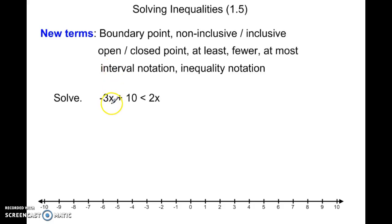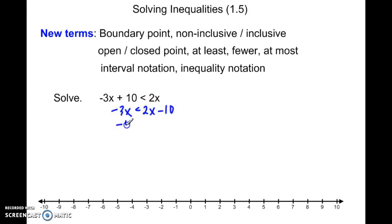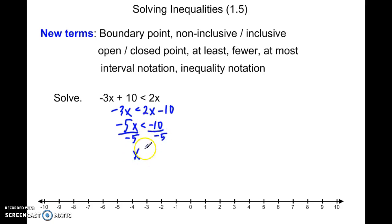Let's go ahead and solve this inequality: negative 3x minus 10 is less than 2x minus 10. I'm going to subtract 2x from both sides, giving negative 5x less than negative 10. And you may remember this rule: when you divide by a negative with an inequality, the sign is going to flip directions, so this will now be x greater than 2.